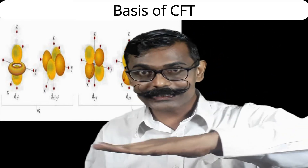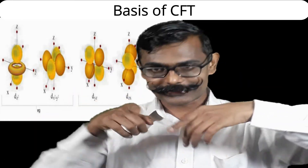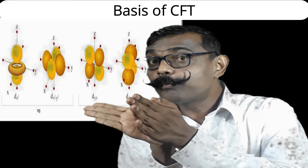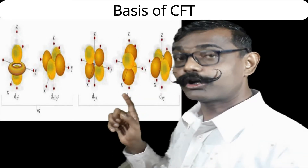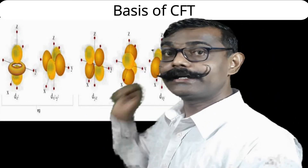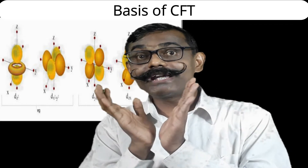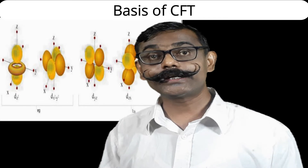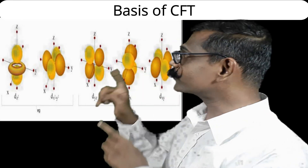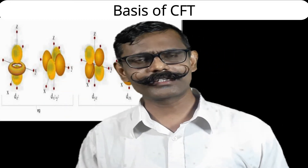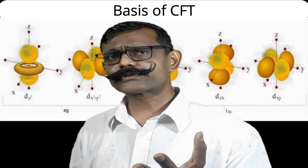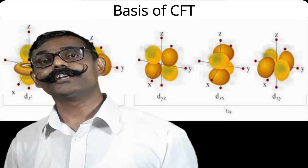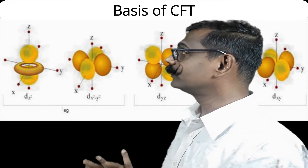The last orbital, dxy, lies in the xy plane. Lobes are in between the x and y axes, making a 45-degree angle to either axis. So the last three orbitals — dxy, dxz, dyz — are in between the axes, while the first two — dx²-y² and dz² — are along the axes. That is the understanding of these five d orbitals.